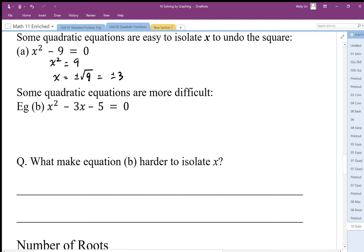What makes equation b much harder to isolate x? We have a square and 3x together which cannot be undone at the same time.